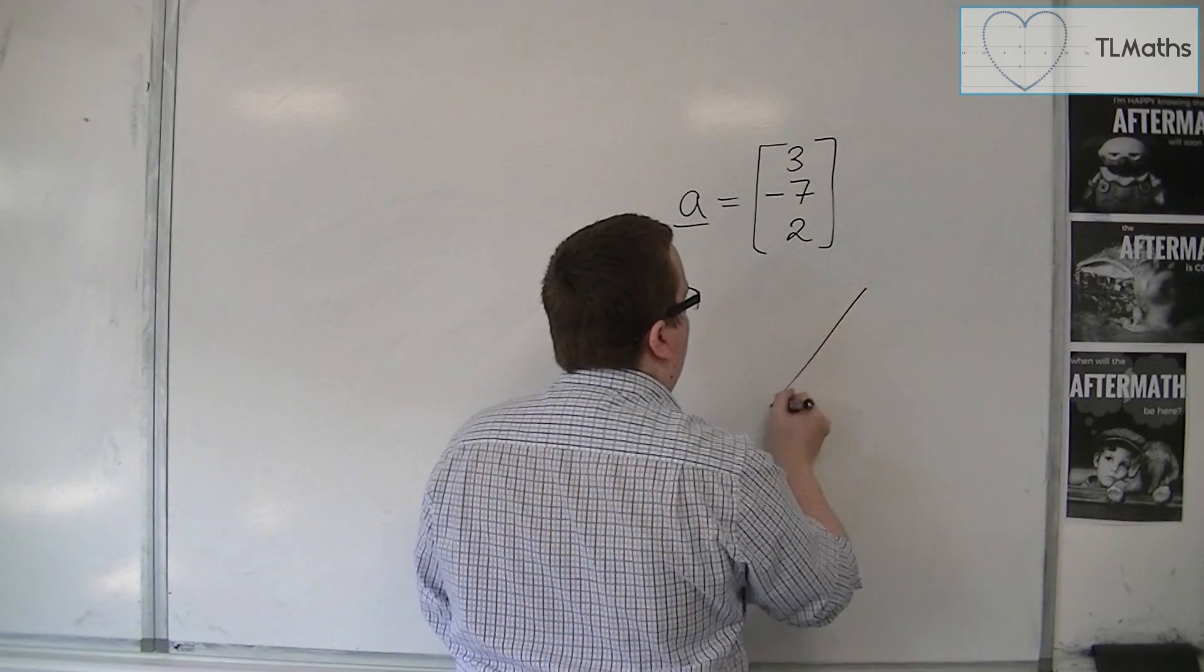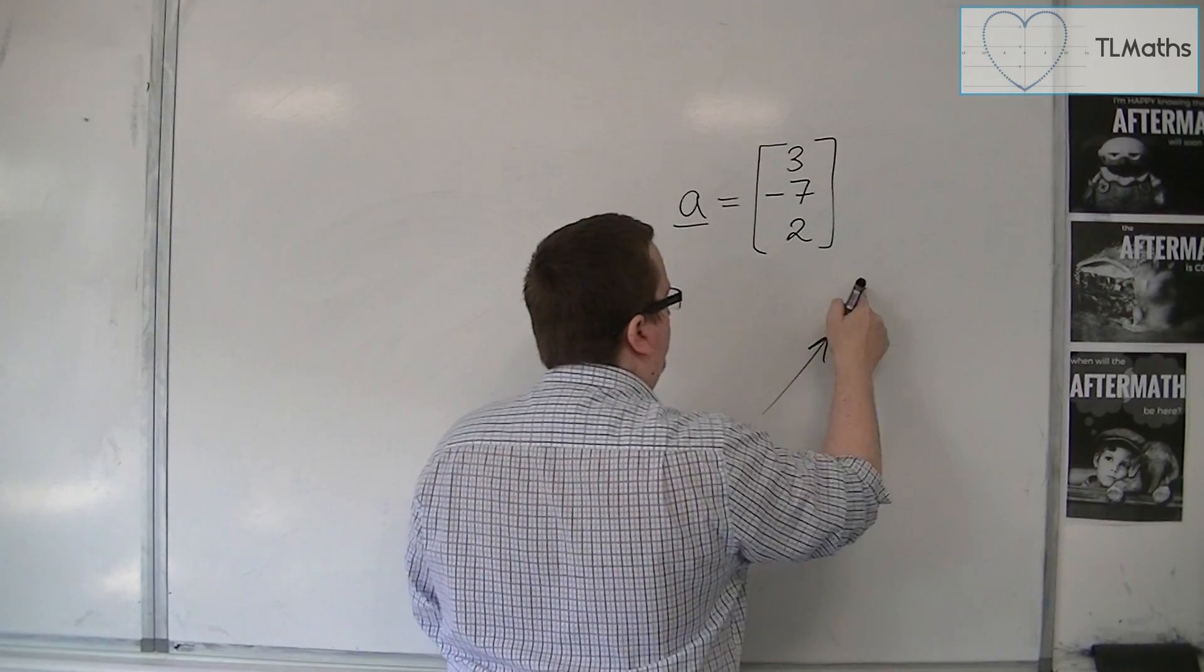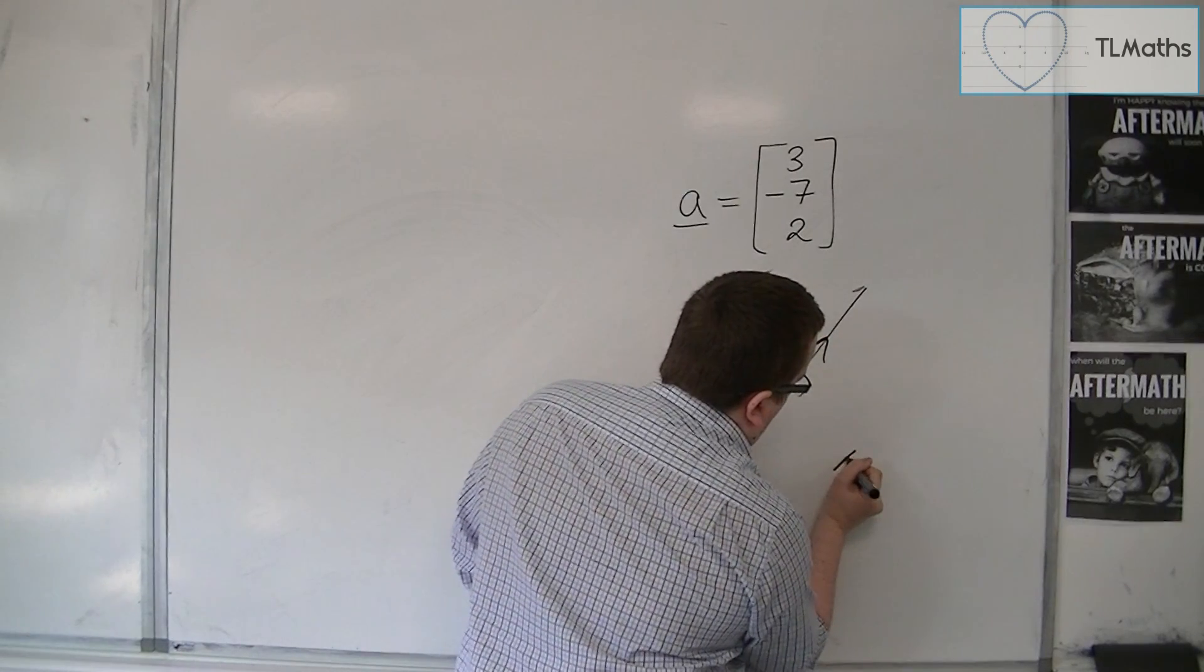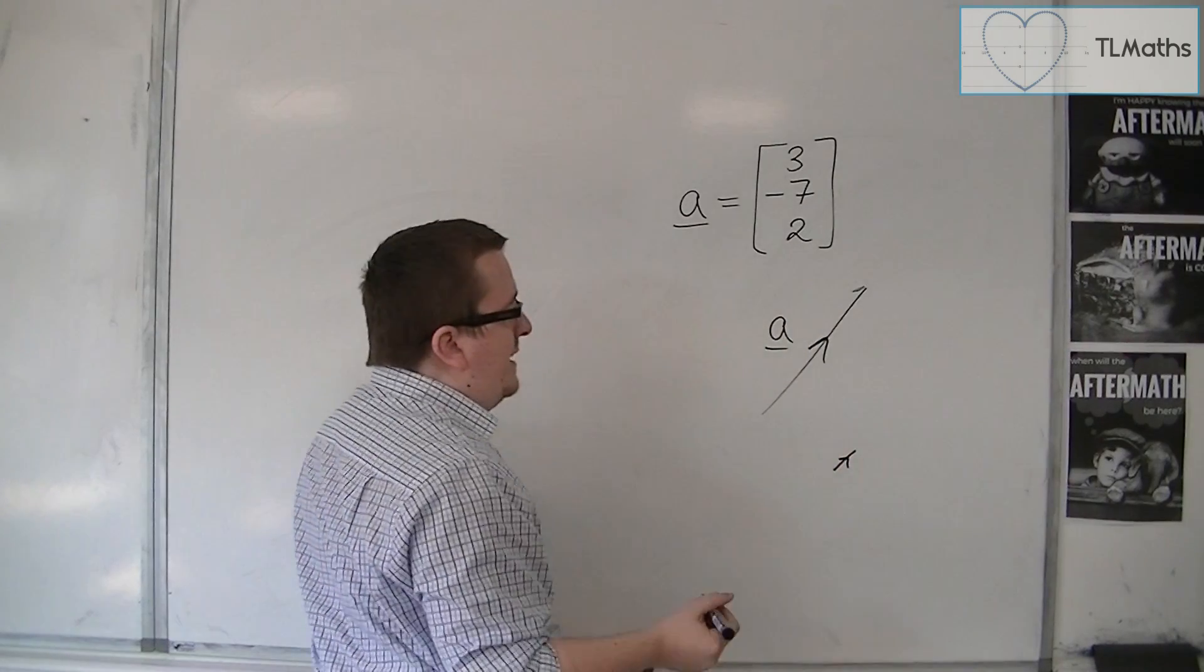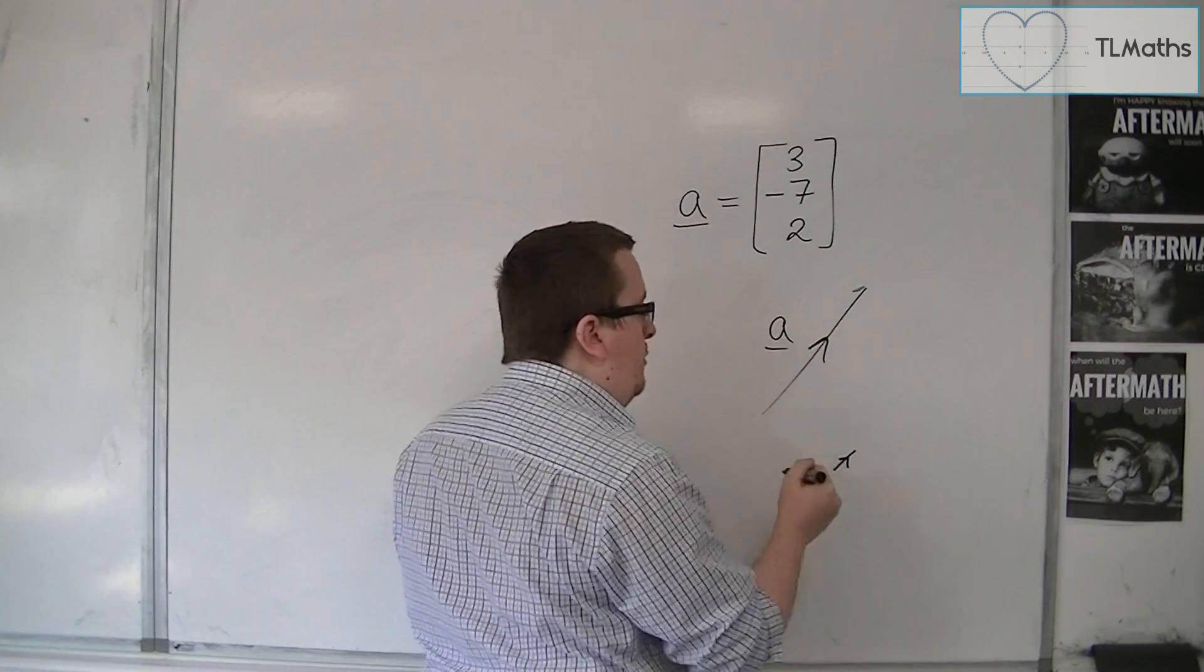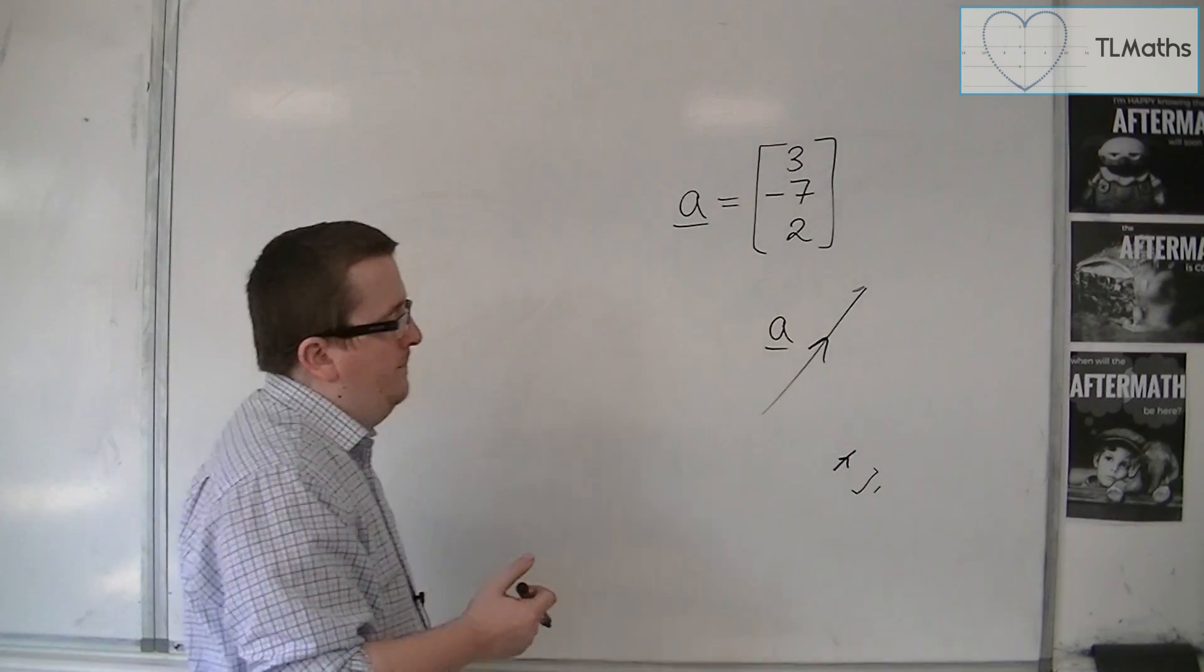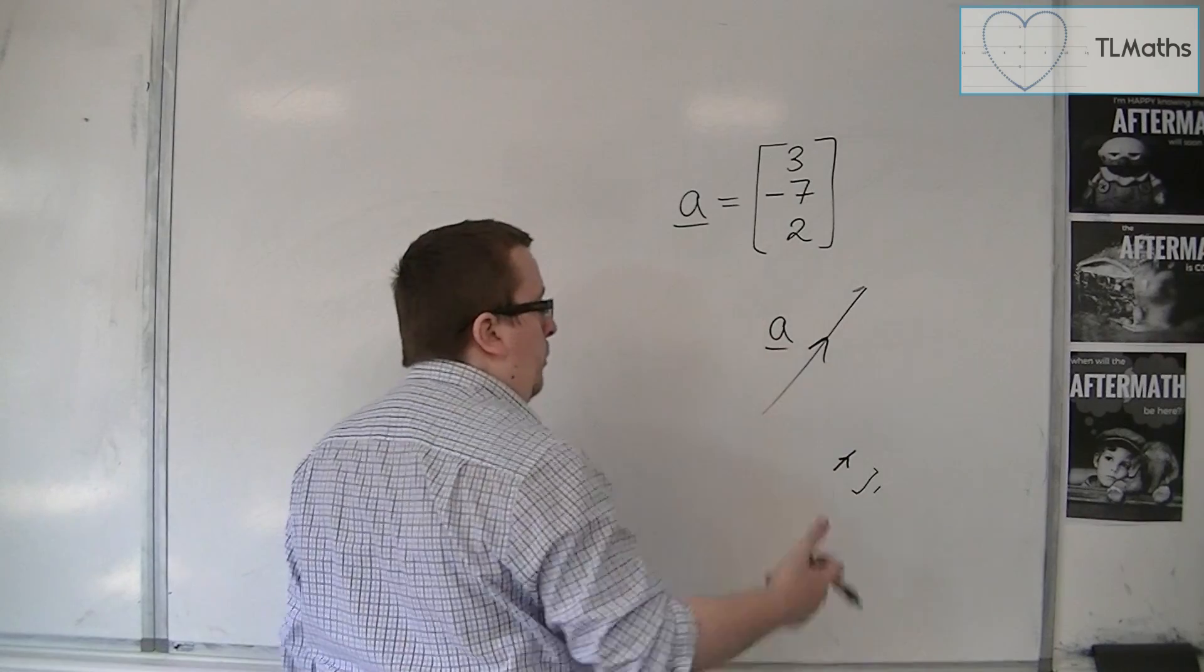So we have this vector A. And we actually want this vector that's going in exactly the same direction that has unit length. So this is actually of length 1, but it's parallel to this one.